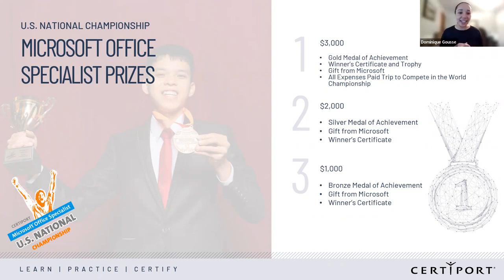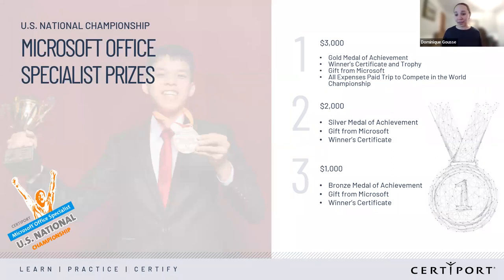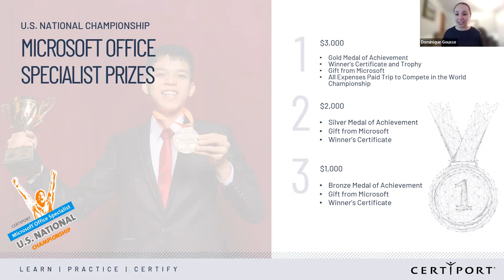For MOS, all students receive a scholarship: first place gets a $3,000 scholarship, second place $2,000, and third place $1,000 — bumped up this year. The first place student also gets a medal, certificate, trophy, and a gift from Microsoft, which historically has been things like Surface laptops, tablets, Xboxes, and headphones. Most importantly, the first place winner receives an all-expenses-paid trip to compete at the World Championship and represent the U.S. Second and third place students also get medals of achievement, gifts from Microsoft, and winner certificates.